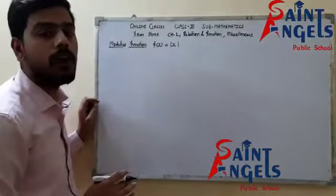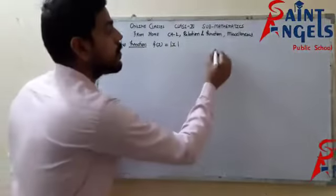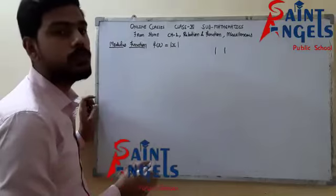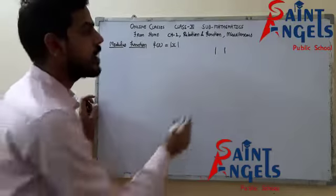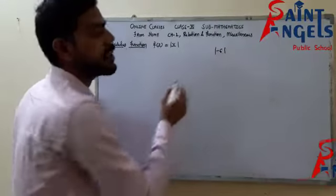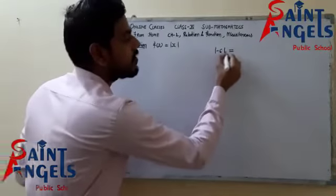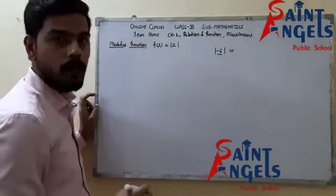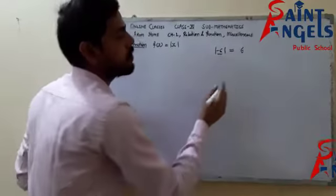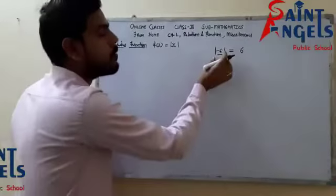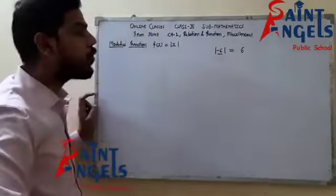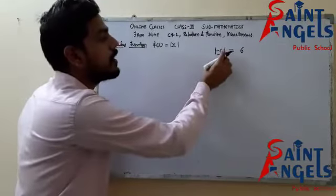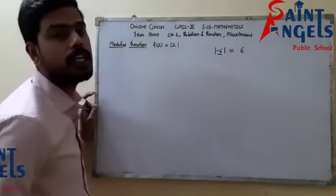I know you all are aware about this symbol — this is known as modulus. In 10th grade, you must have come across terms like if there is minus 6 inside the modulus. We said that whatever number is inside the modulus, we will get only a positive term. So modulus of minus 6 would be 6. But do you know the reason behind it? Whenever we put a negative number inside a modulus, it converts to a positive value. What is the mechanism behind it?